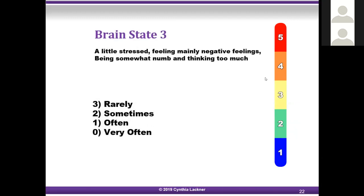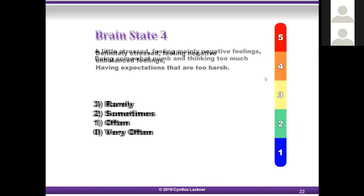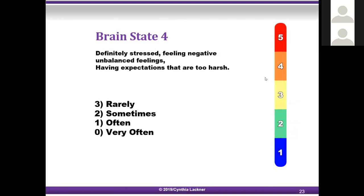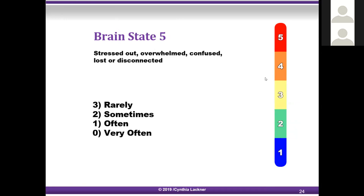Brain state three: feeling a little stressed, feeling mainly negative feelings, being somewhat numb and thinking too much like ruminating. Give yourself three for rarely, two for sometimes, one for often, zero for very often. Brain state four: definitely stressed, feeling negative and unbalanced, having expectations that are too harsh. Give yourself three for rarely, two for sometimes, one for often, zero for very often. Brain state five: stressed out, overwhelmed, confused, lost, or disconnected. Give yourself three for rarely, two for sometimes, one for often, and zero for very often.